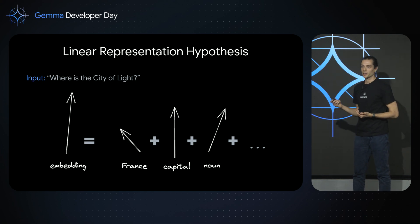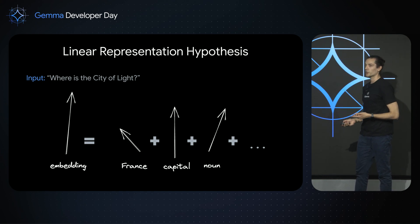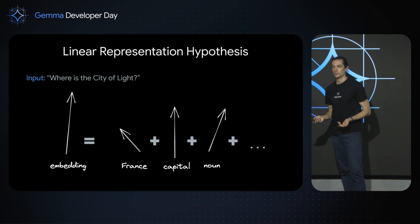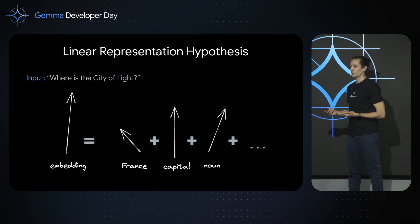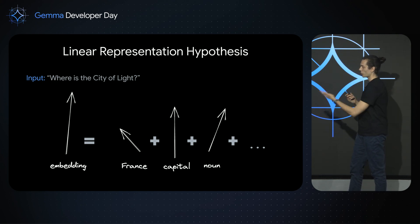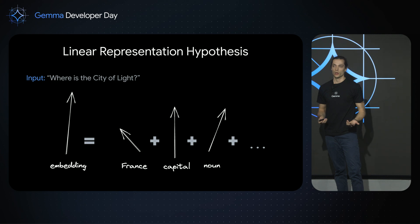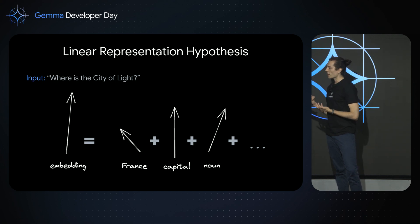In this particular case, the representation vector could be the sum of a vector for France, a vector for the capital of a country, and so on. Importantly, there are many other concept vectors which do not contribute in this particular example but would be present on other inputs — for example, a concept vector for Python code.